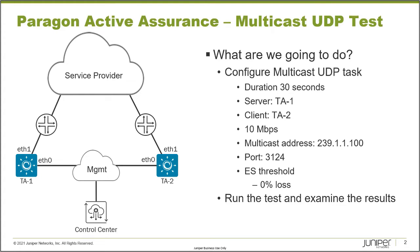We are going to configure the multicast UDP task. Multicast is normally used as a transport mechanism for services such as IPTV or even updating PCs at the same time. By using the multicast UDP task, we're going to be able to figure out how the network handles multicast traffic — things like end-to-end delay, jitter, and packet loss, as well as other metrics.